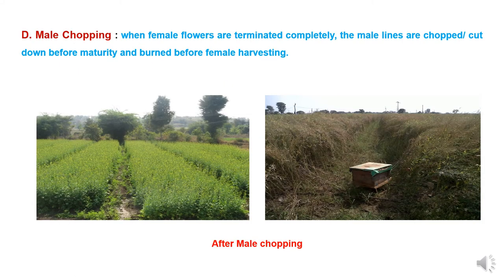Male chopping is also important for quality maintenance. When female flowers are completely terminated and flowering is over, the male lines are chopped out or cut down before maturity and burned before female harvesting. At the time of female harvesting, no male plants should be left in the field, and after full inspection and verification, female harvesting should proceed — nullifying chances of contamination with male plants.